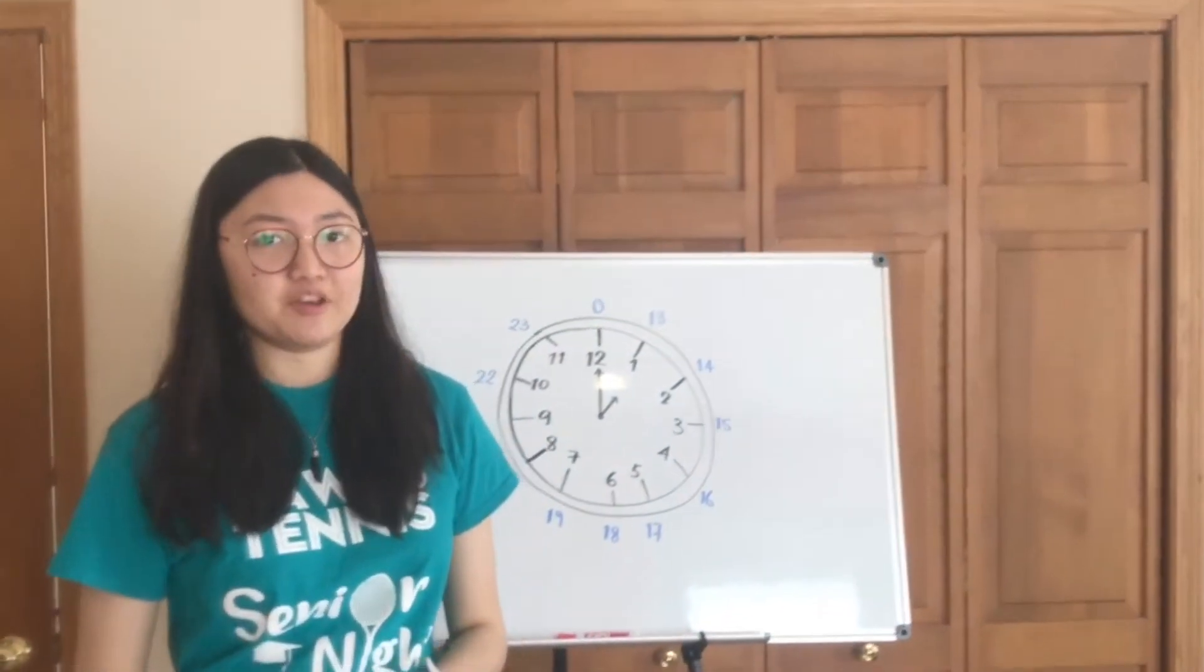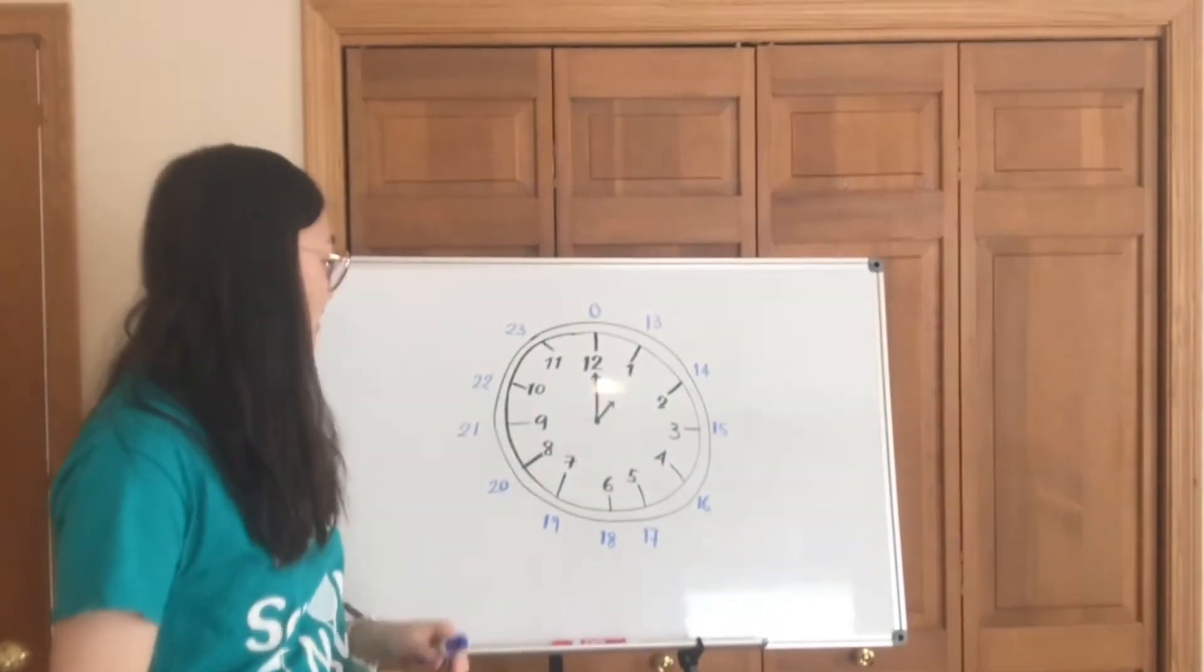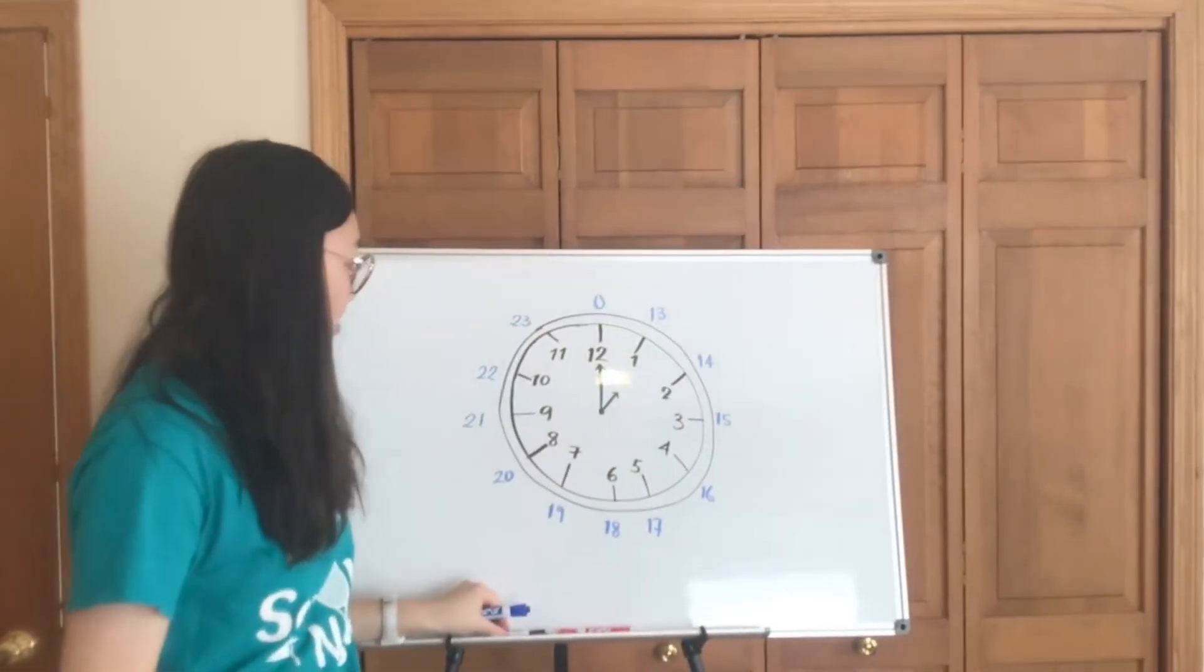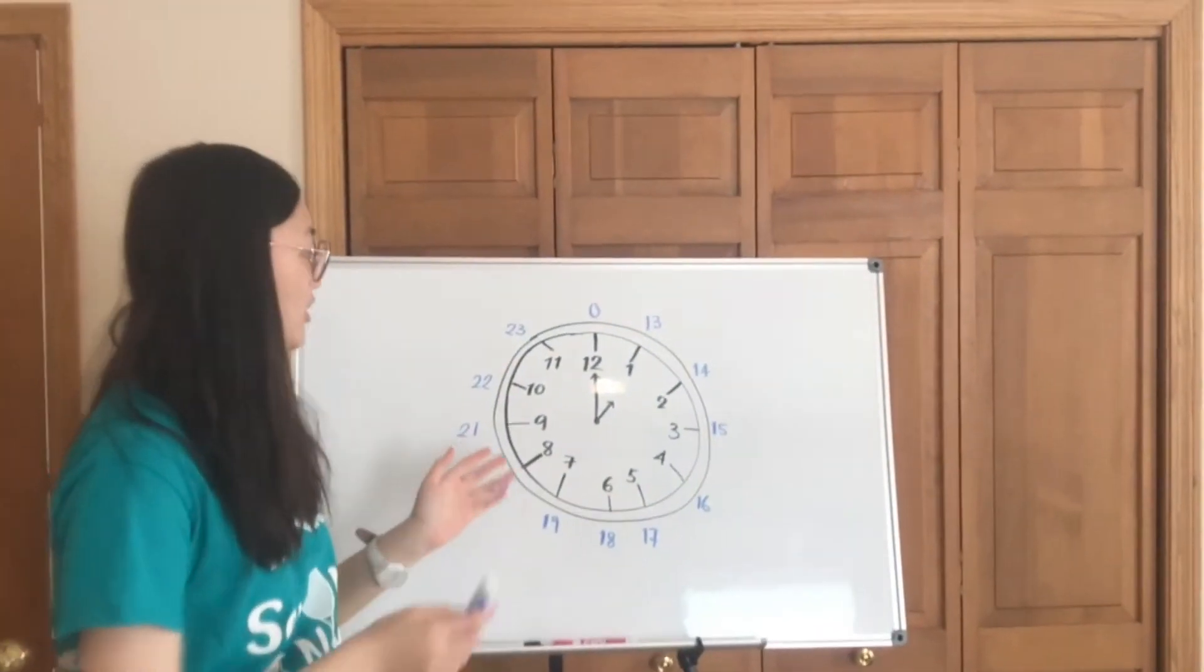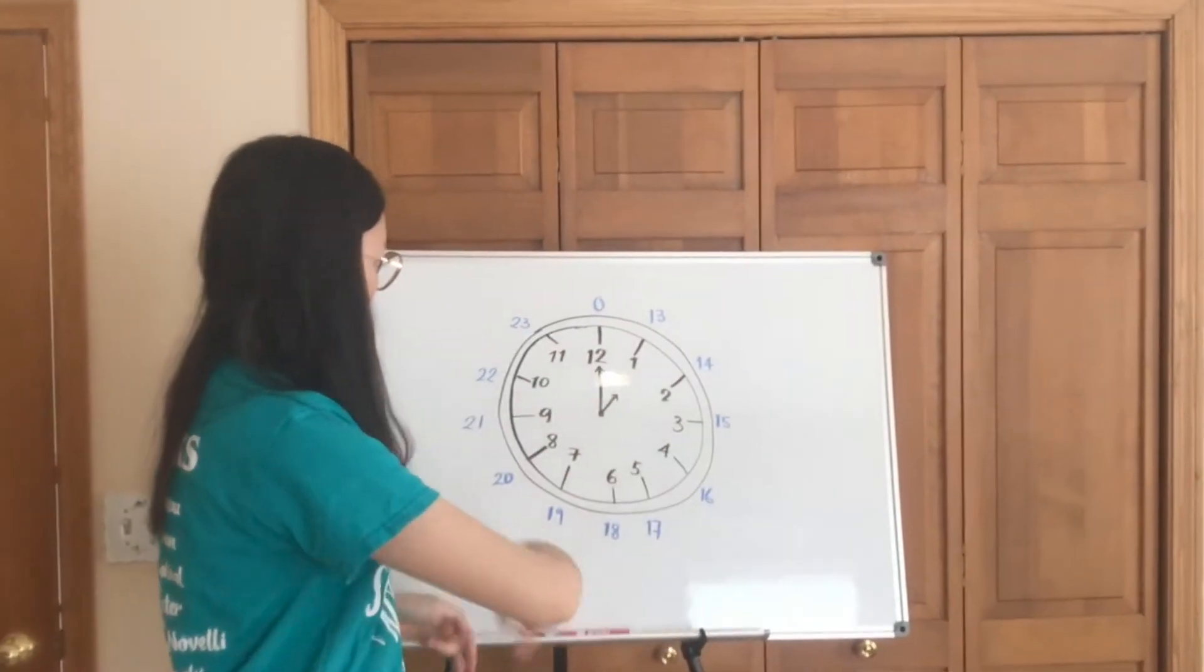To understand modular arithmetic, let's start with an analogy with a clock. So we all know that on a clock we can show 12 hours: 1, 2, 3, 4 through 12.